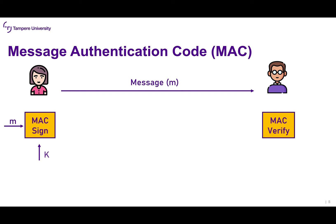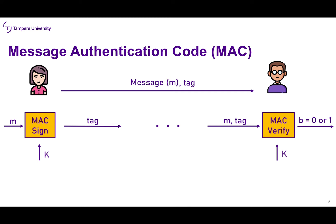Alice wishes to send an integrity-protected message to Bob. She generates message M, gives it as input to the MAC Sign algorithm along with the secret key K already shared with Bob. Running the Sign algorithm outputs a tag T. This tag is sent to Bob along with message M. Upon reception, Bob uses the Verify algorithm, giving as input the message M, the tag, and the same secret key K, which outputs 0 or 1 — zero if verification fails, one if verification is successful.